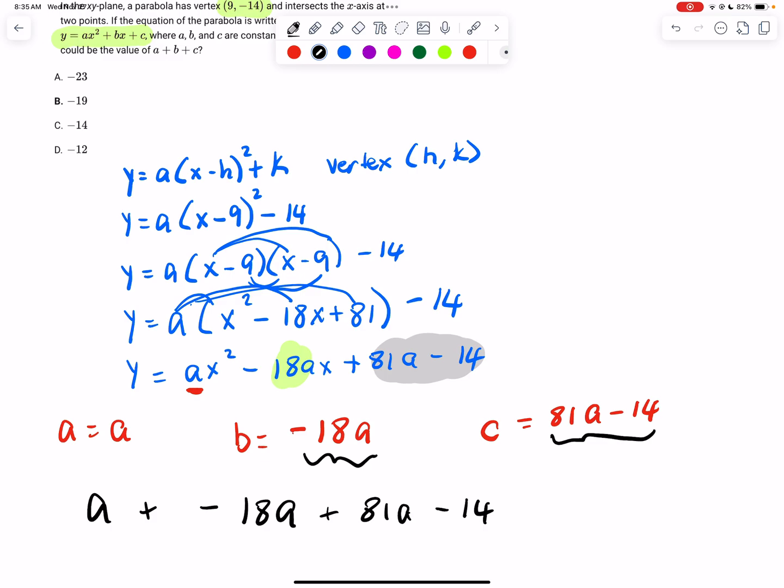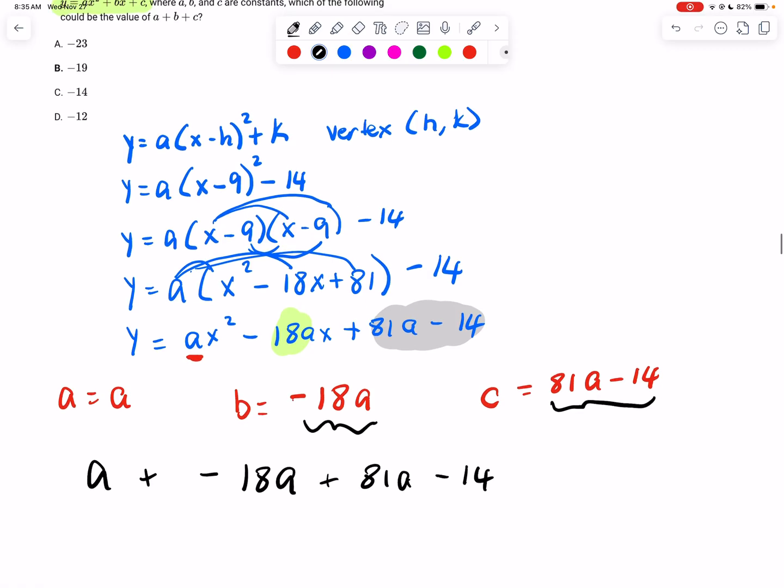Alright, so now we have a bunch of a's, which is good. That is just one variable rather than the three we had before. So joining these variables, joining our like terms here, we have 64a minus 14.